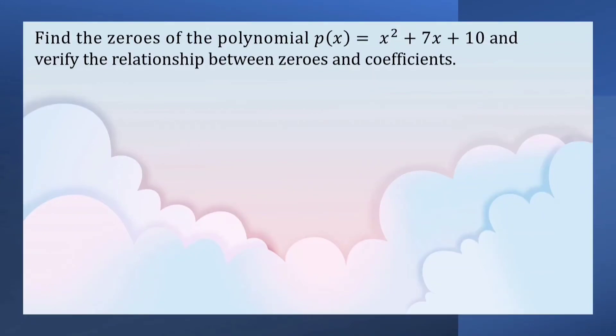Find the zeros of the polynomial p(x) = x² + 7x + 10 and verify the relationship between zeros and coefficients. Here we are given p(x) = x² + 7x + 10. We have to find the zeros of the polynomial, the value where the polynomial becomes 0.